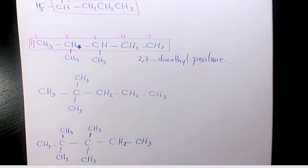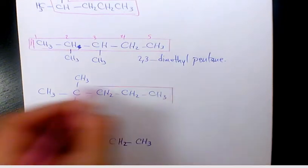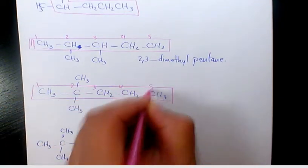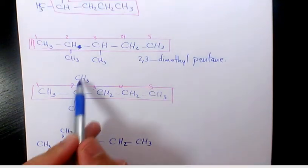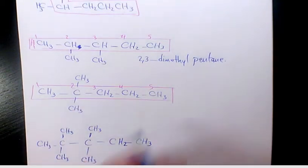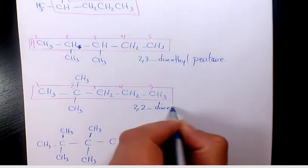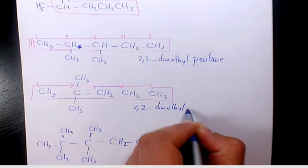Next one. One, two, three, four, five. And we have two methyl groups, both of them on the second carbon. So it's going to be 2,2-dimethylpentane.